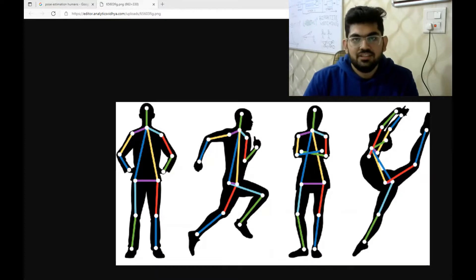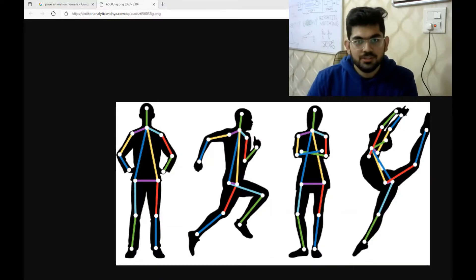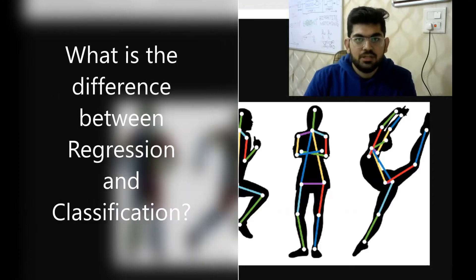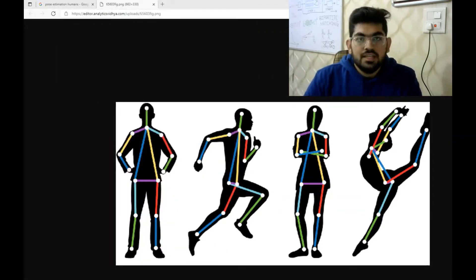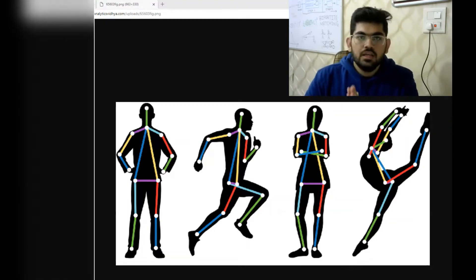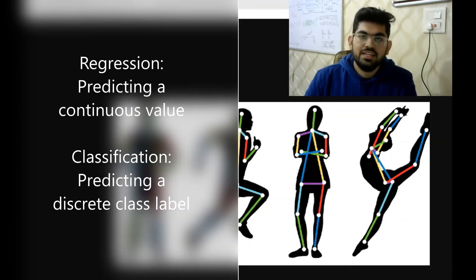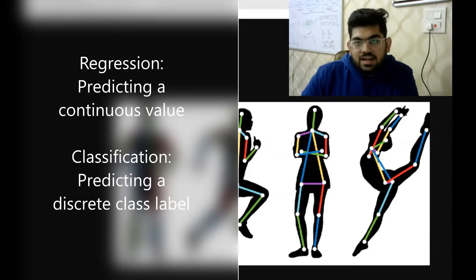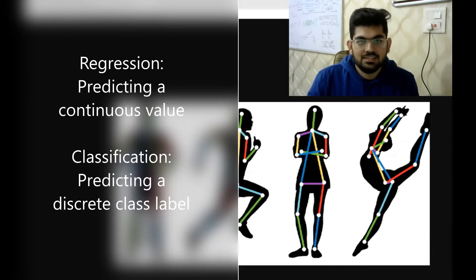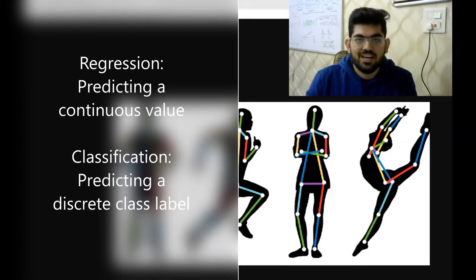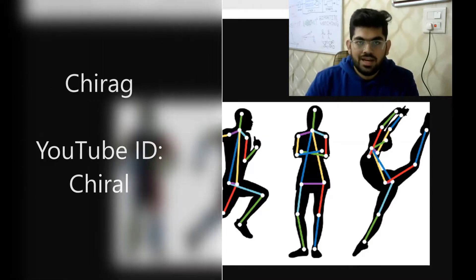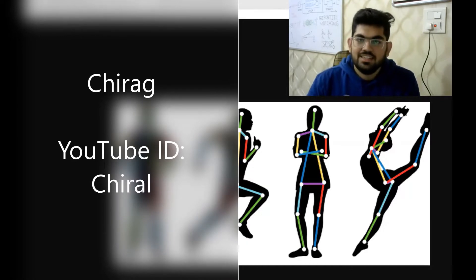Before starting with the video, the quiz question from the previous video was: what is the difference between regression and classification? The answer is regression is the task of predicting a numerical value, and classification is the task of choosing a correct class or a particular value from a given set of classes or values. Chirag got that answer right.